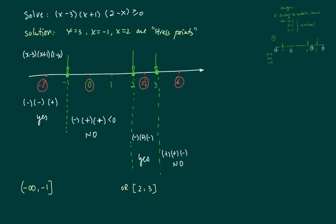Minus 2 when you plug it in here, the first term is negative, second term is negative as well. Third term is 2 minus minus 2, that's a positive term. So this chunk has minus, minus, plus. Minus times minus is positive times another positive term. This whole thing is actually bigger than 0. That fits my requirement.